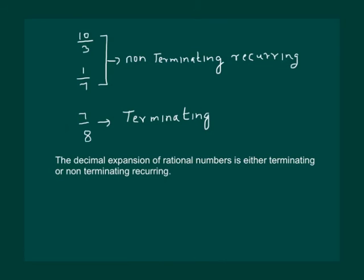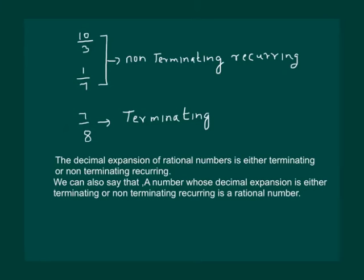Hence we come to the conclusion that the decimal expansion of a rational number is either terminating or non-terminating recurring. We can also say that a number whose decimal expansion is either terminating or non-terminating recurring is a rational number.